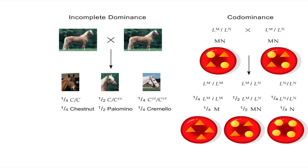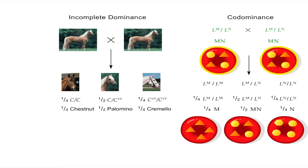However, heterozygotes with two incompletely dominant alleles have a phenotype that is intermediate between the phenotypes of the two homozygotes. In contrast, alleles that are codominant are each fully expressed in heterozygotes, so that heterozygotes show the phenotypes of both homozygotes.